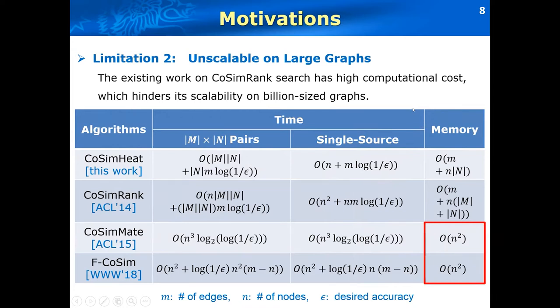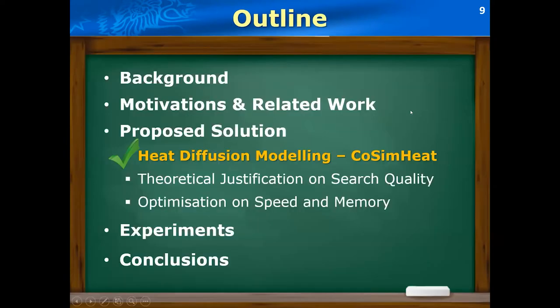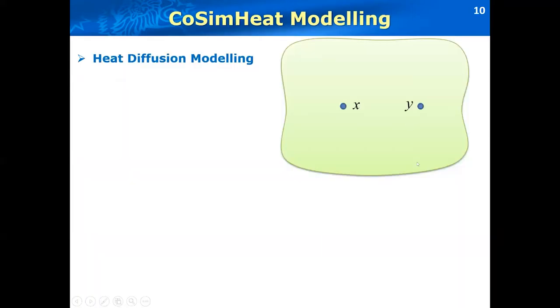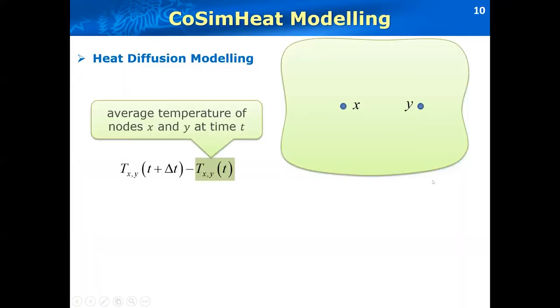Inspired by this, in this paper, we proposed a new model called COSIM heat, which is based on heat diffusion mechanisms. The basic idea of our heat diffusion model is based on the temperature. We first introduce the notation T, which denotes the average temperature between the two nodes X and Y at the time T.